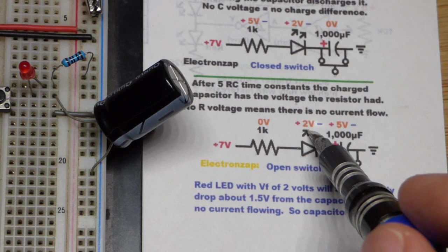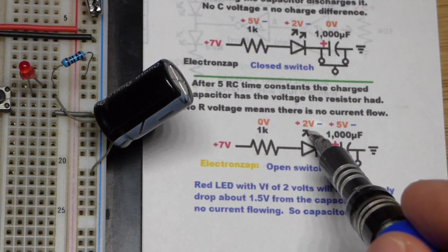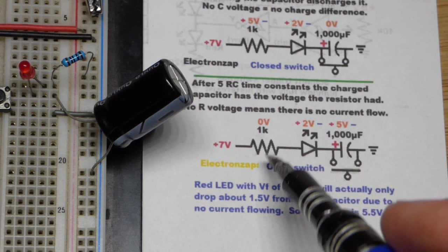the red LED is not going to drop 2 volts. It's going to work its way down to only dropping about 1.5 volts. But it's estimated to about 2 volts.